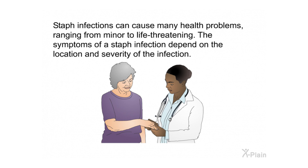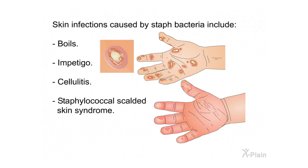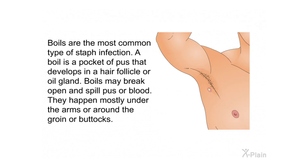Skin infections caused by staph bacteria include boils, impetigo, cellulitis, and staphylococcal scalded skin syndrome. Boils are the most common type of staph infection. A boil is a pocket of pus that develops in a hair follicle or oil gland. Boils may break open and spill pus or blood; they happen mostly under the arms or around the groin or buttocks.